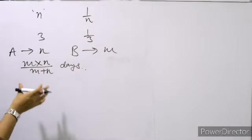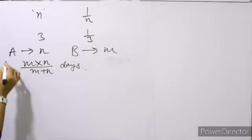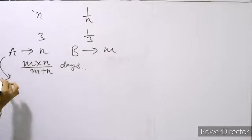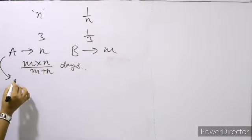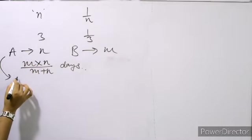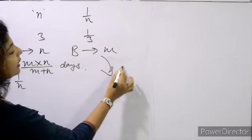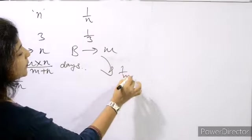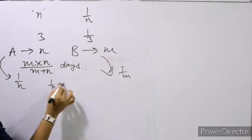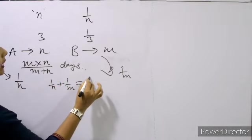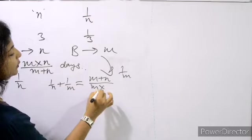How did this derivation come? If A is doing work, A will finish the work in n days, so A does 1 upon n in one day. And B does 1 upon m in one day. If we add them: 1 upon n plus 1 upon m equals m plus n divided by m into n. So in one day, their combined work is that. Taking the inverse gives m into n divided by m plus n days.